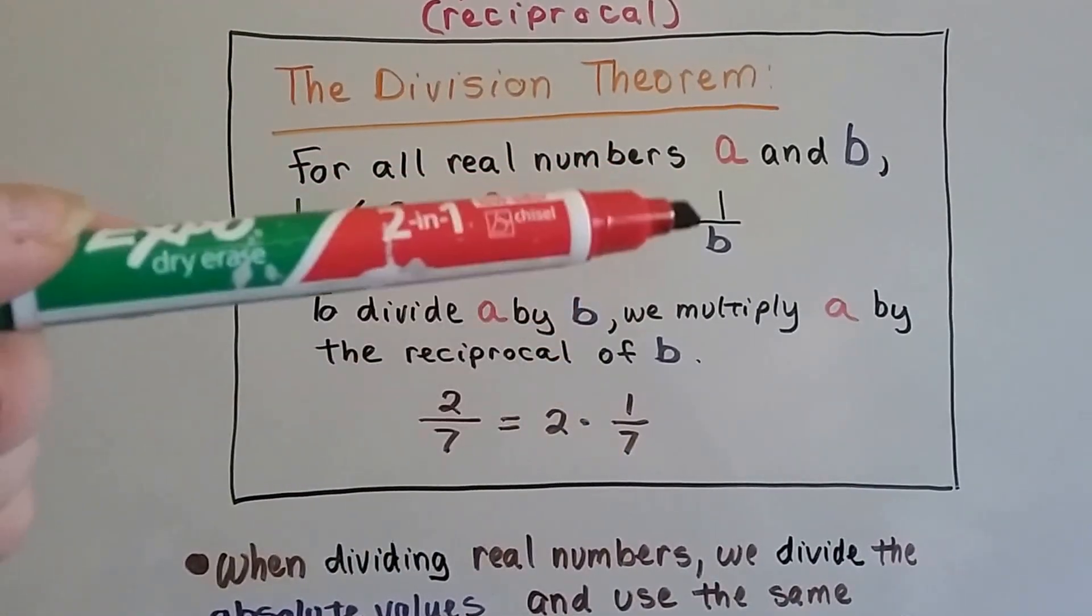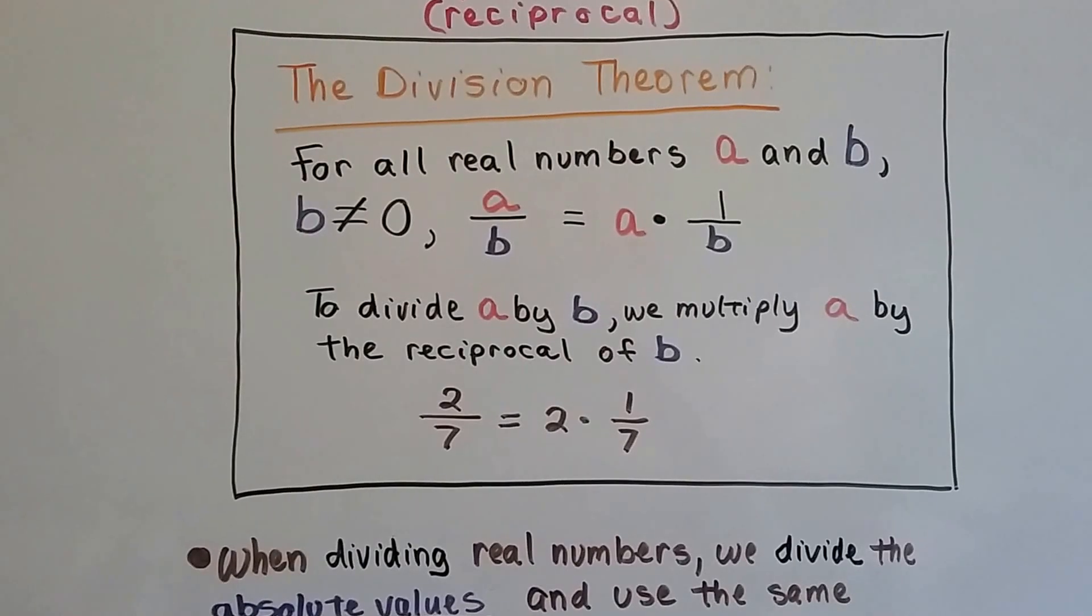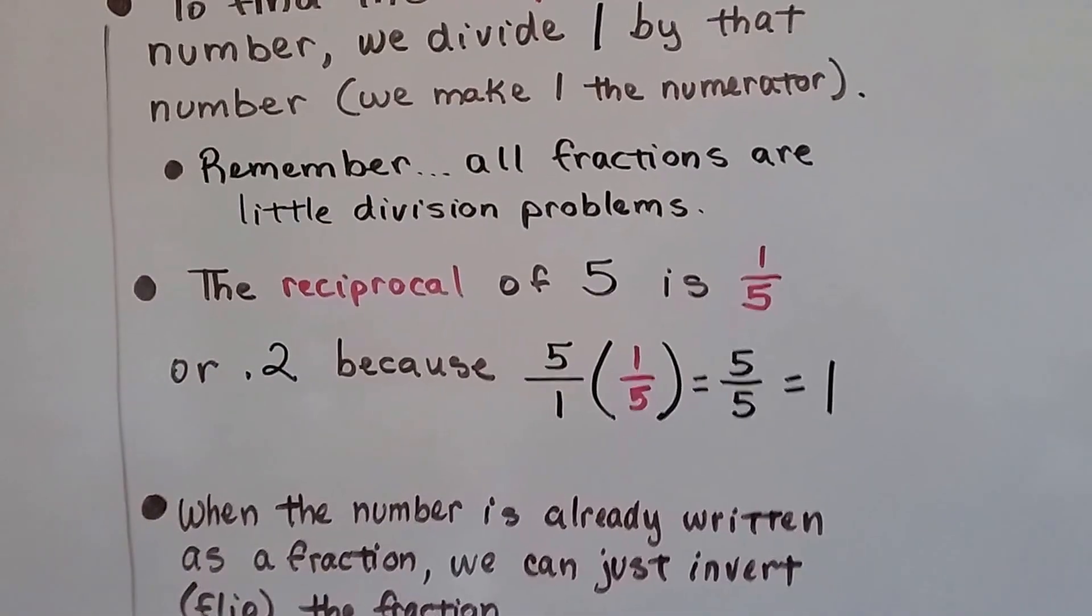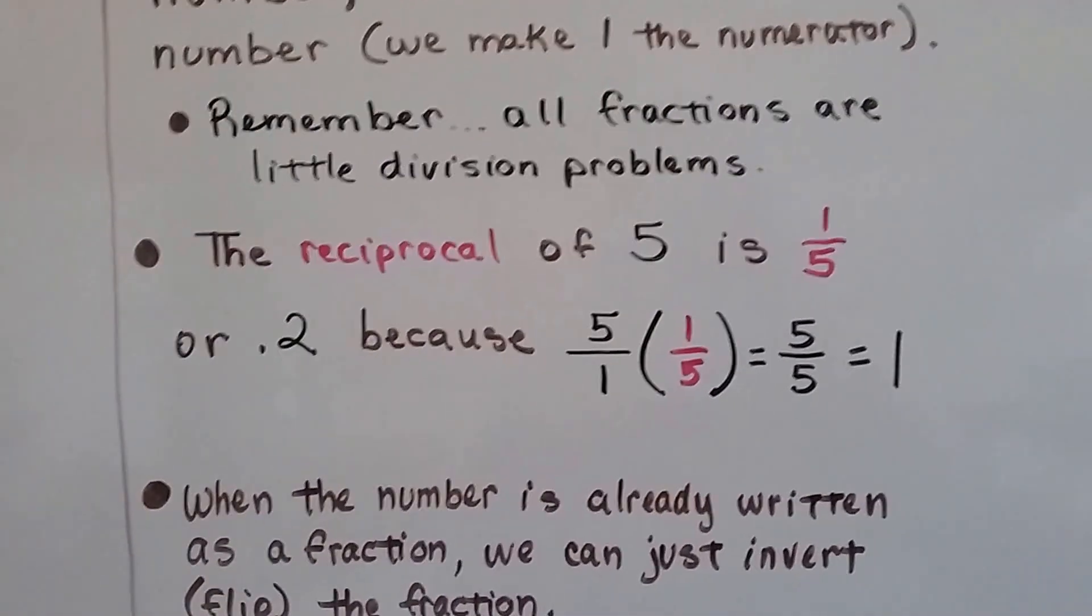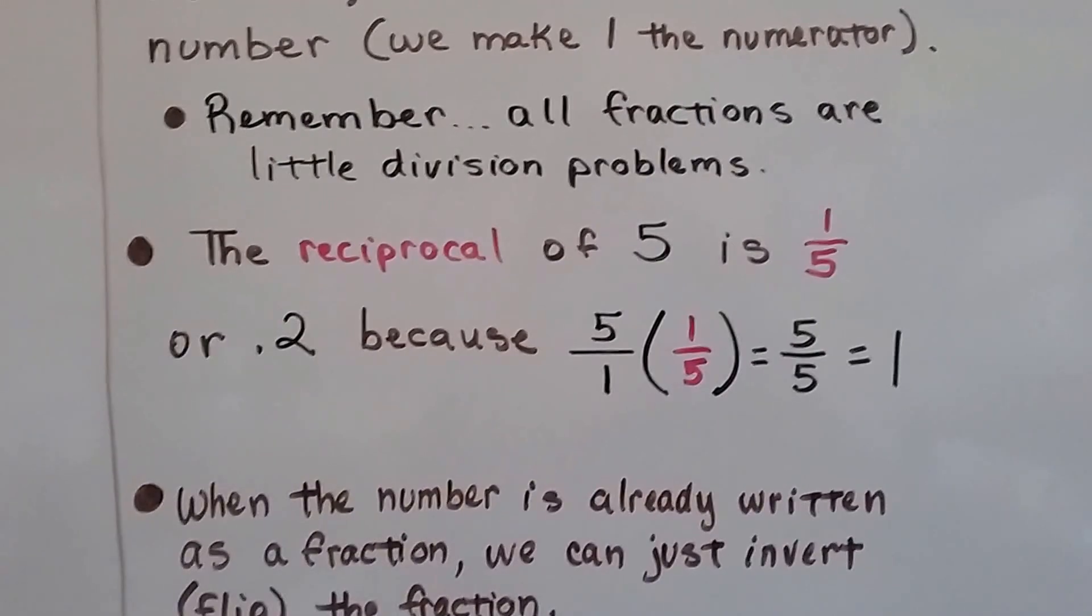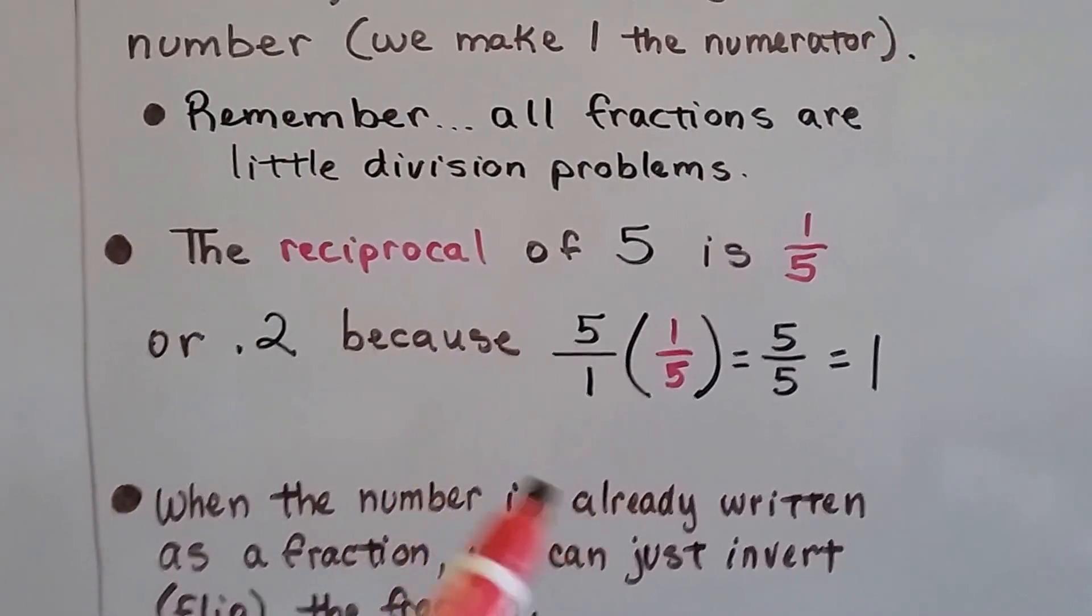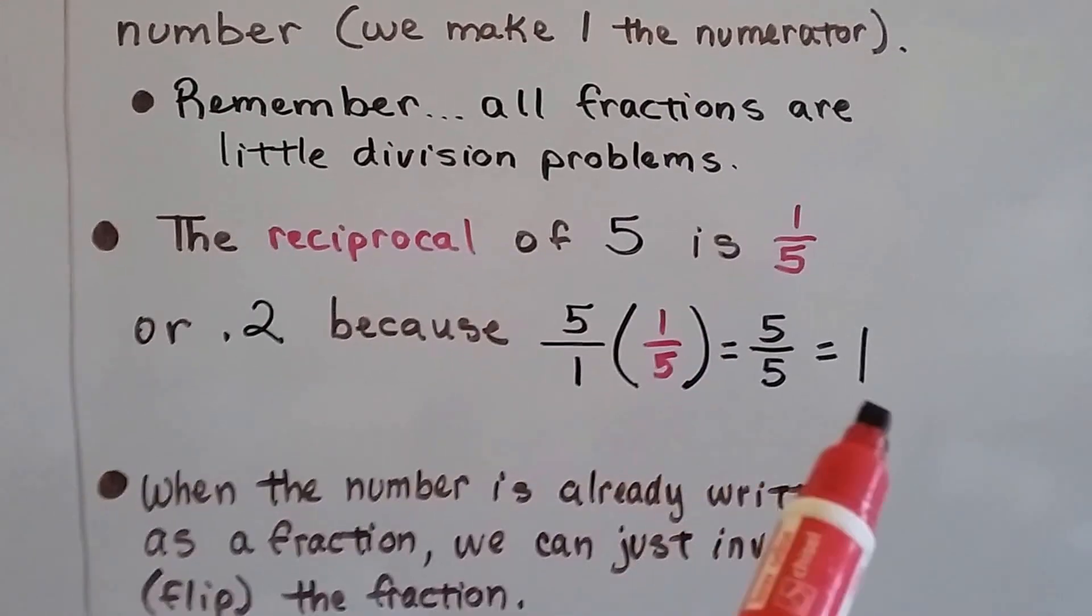See how these compare to each other? We had 2 7ths, and it's the same thing as 2 times 1 7th. Remember, all fractions are little division problems. The reciprocal of 5 is 1 5th, or 2 10ths, because the 5 can be written as 5 over 1. We flip it around to 1 5th, and we get 5 over 5. That's a 1.